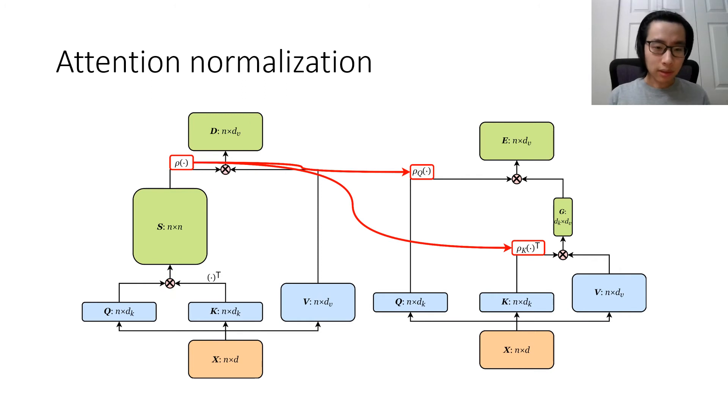The final missing piece is that we have to split the single normalization function to two normalizers, one on queries and one on keys.